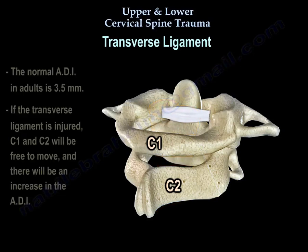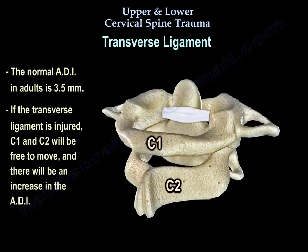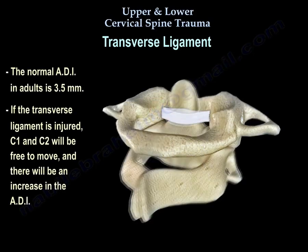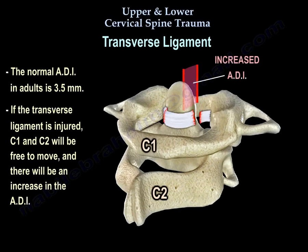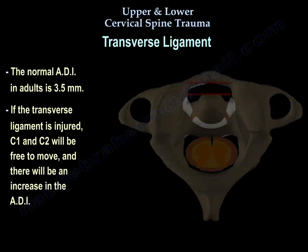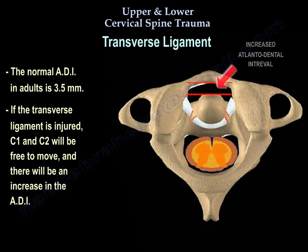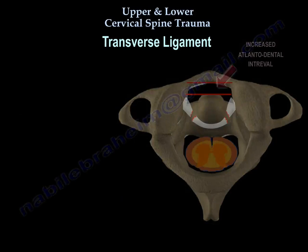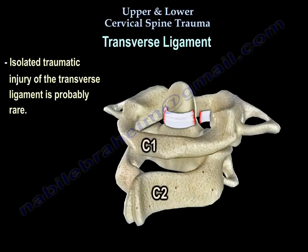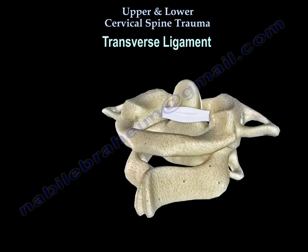The ADI in an adult is 3.5 mm. So if that ligament is injured, C1 and C2 will be free to move and you'll have an increase of the ADI. Isolated traumatic injury of the transverse ligament is probably rare, but let's take a condition where the transverse ligament injury can be a problem.